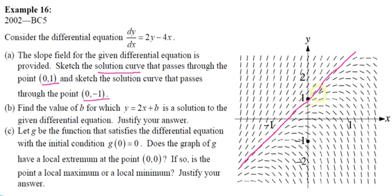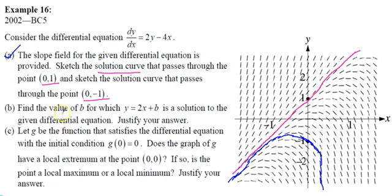Do not put arrows on the curves because we don't know where they go — just draw the line edge to edge. The second curve through (0,-1) follows a different path. One curve goes to infinity; the initial value makes a huge difference to the shape of the solution curve. Part A is straightforward — just sketch the two graphs.